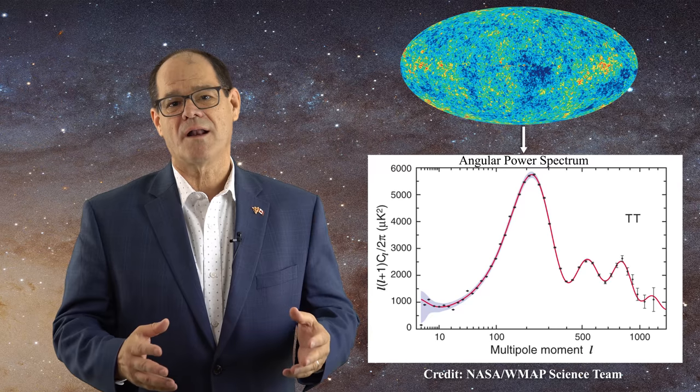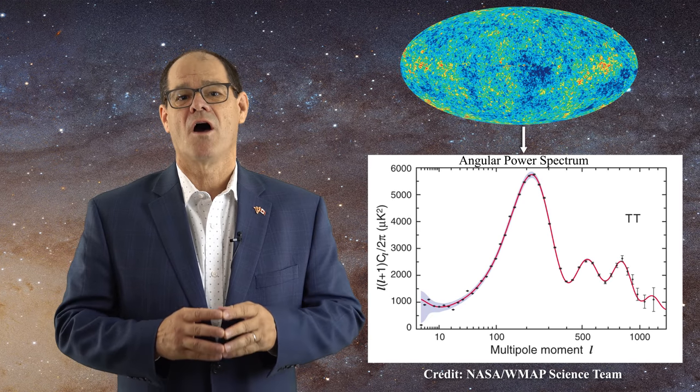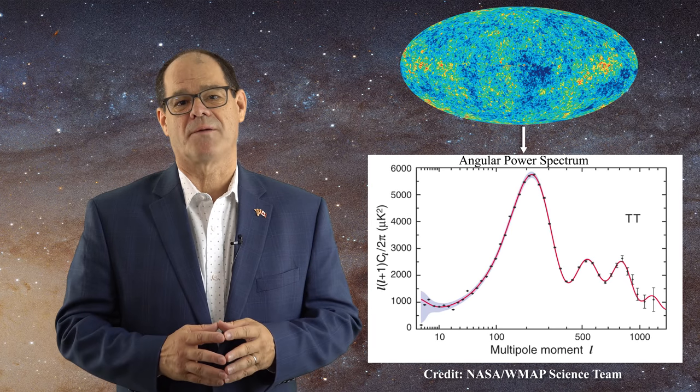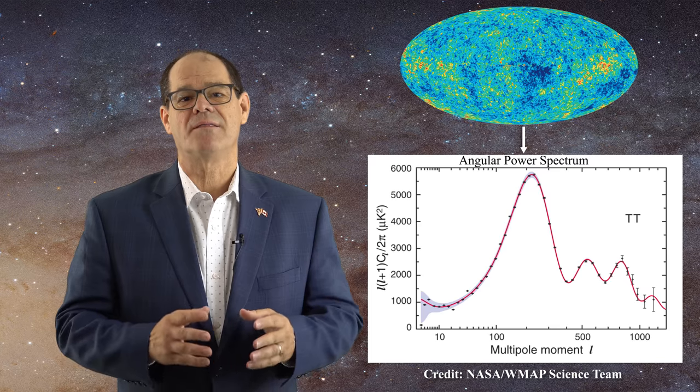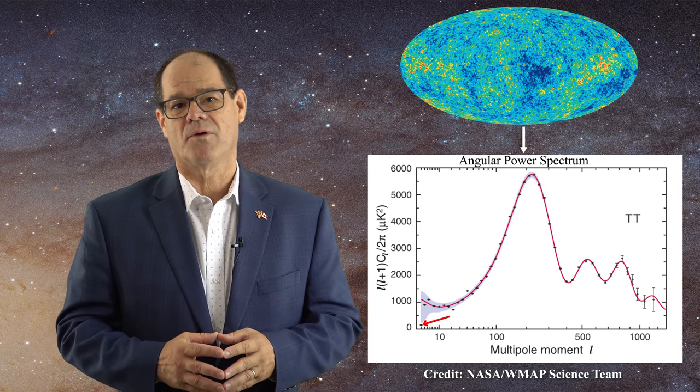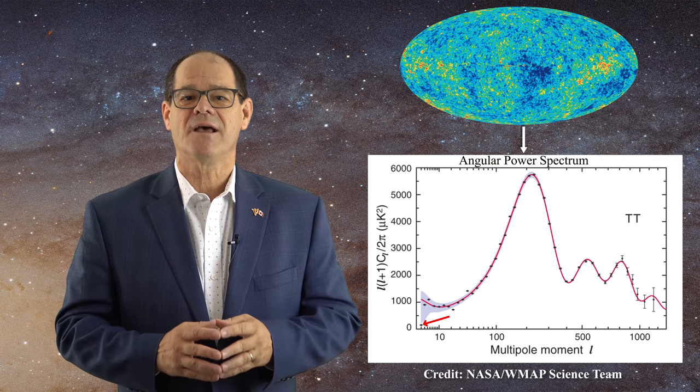Hello everyone and welcome to SkyScholar. In the last video I discussed spherical harmonic analysis and how this approach is used to express the anisotropy maps mathematically. I also highlighted that both the monopole and dipole terms are removed from the acquired data prior to generating these maps. As such the lowest term in the angular power spectra actually corresponds to the quadrupole. We will move to the multipoles in the next video. In this presentation I want to focus our discussion on the dipole.